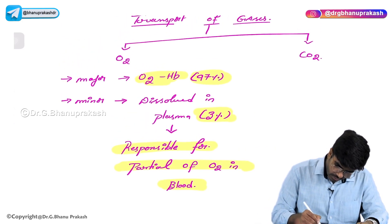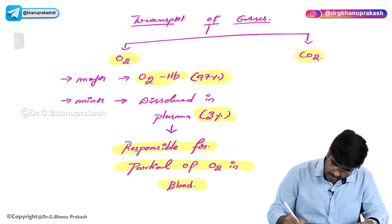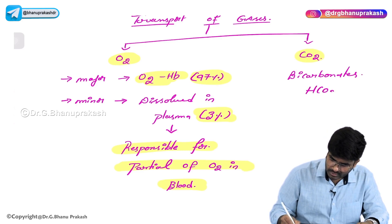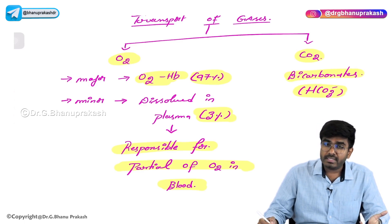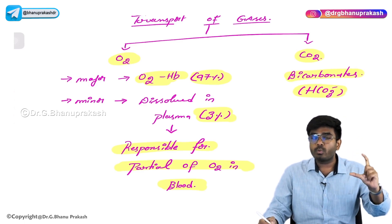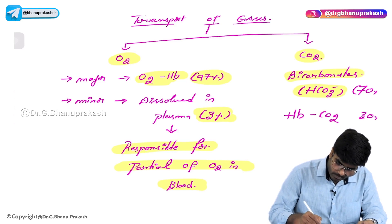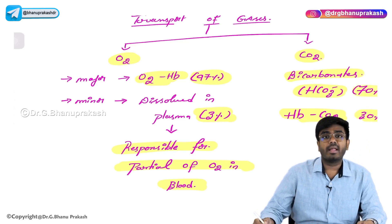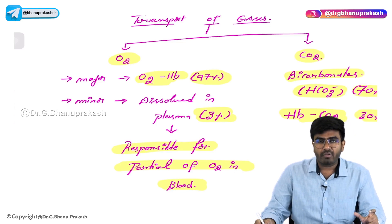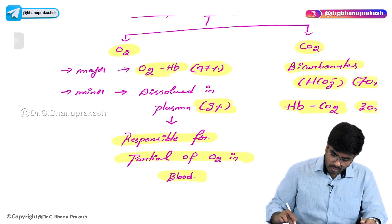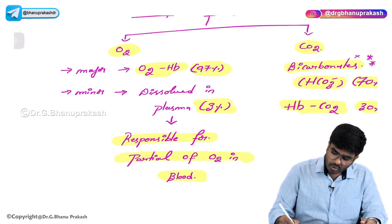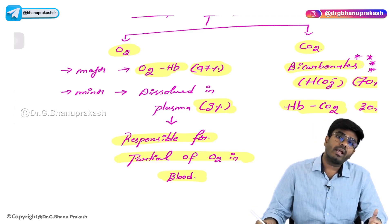Carbon dioxide is transported in the form of bicarbonates — HCO3 minus ions. The carbon dioxide produced at the level of tissues is converted into bicarbonates, and those bicarbonates travel in the plasma. The major route of transport for carbon dioxide is bicarbonates — almost 70 percent. And 30 percent of carbon dioxide is transported by binding to hemoglobin, forming carboxyhemoglobin. So the major form of carbon dioxide transport is bicarbonates — a very important MCQ point.